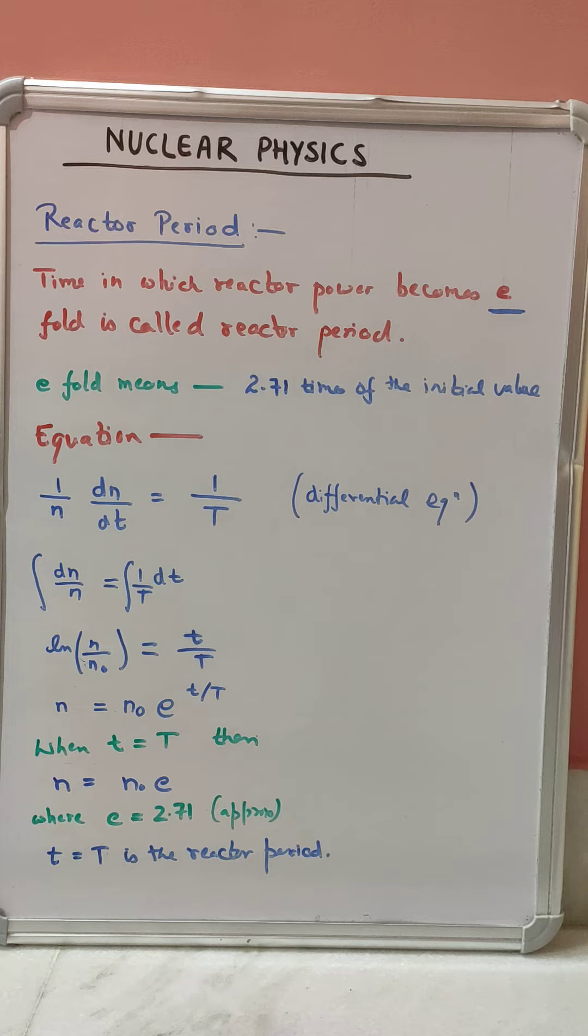If we integrate both sides, what we will get? ln of n by n0 equals small t by capital T.